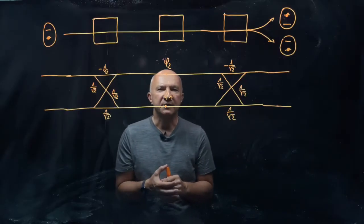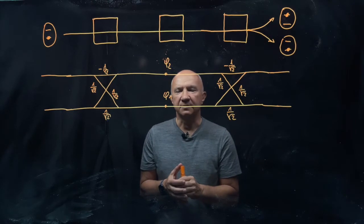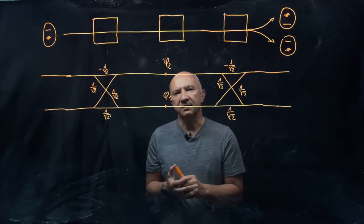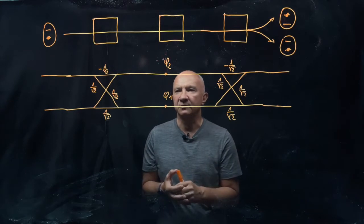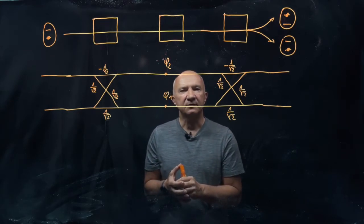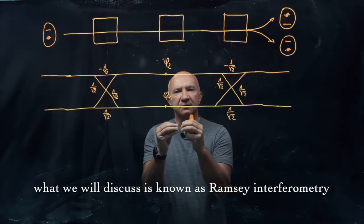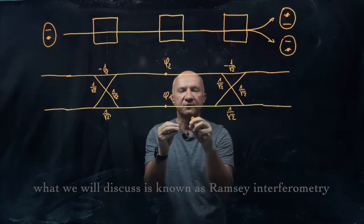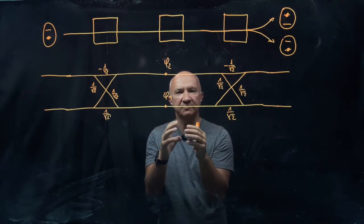Let me give you a very simple example of quantum interference in action. I can talk in principle about the double-slit experiment, which is a standard textbook example, but for the purpose of this course let me describe a different kind of experiment. I would like to show you how interference works not in the external degrees of freedom, but in the internal degrees of freedom of individual atoms.